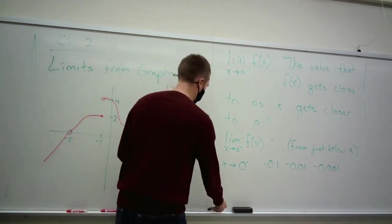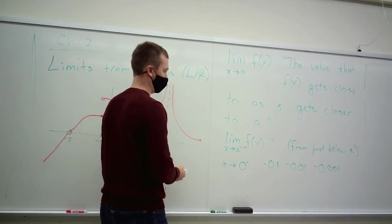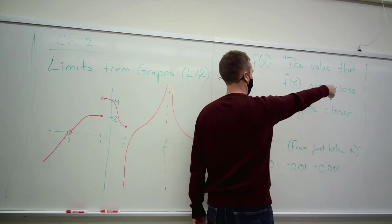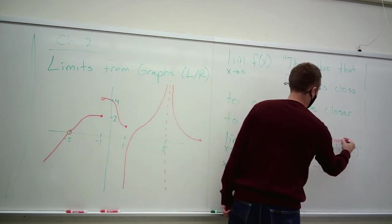And if I made this a plus sign instead, so I'll write it there, right in the same place, it would go here instead of the negative. It would be the value that f of x gets close to as x gets closer to a from just above a.